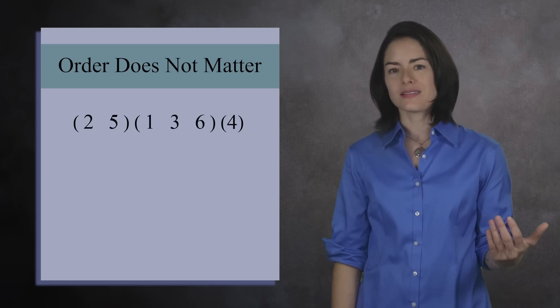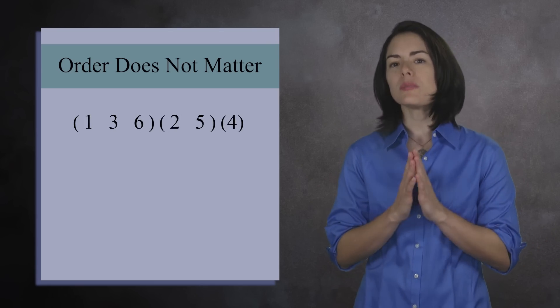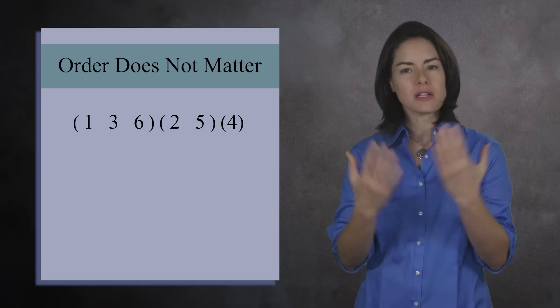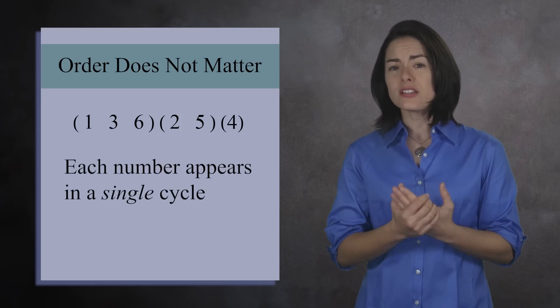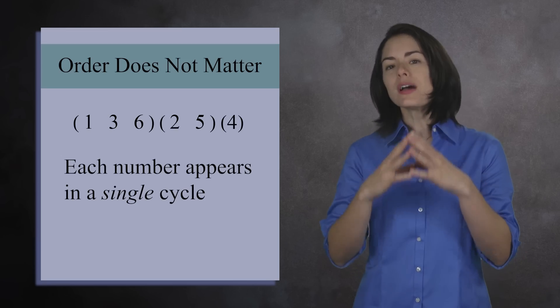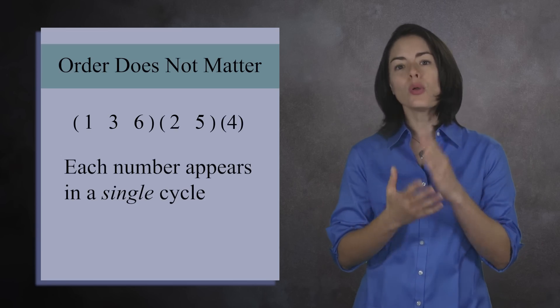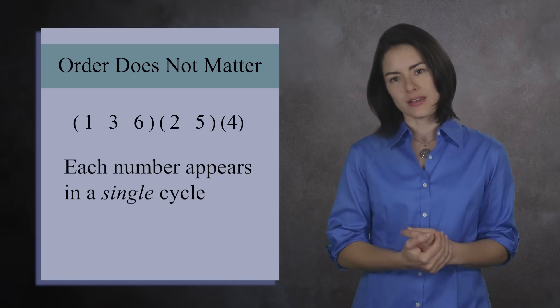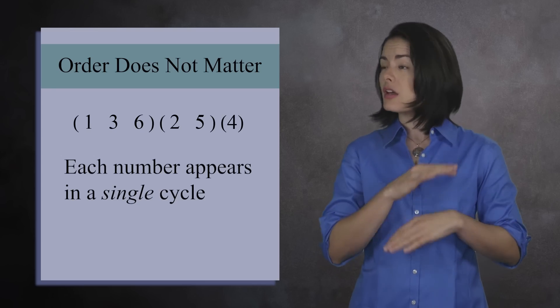But why is this? Here's why. Each cycle can be thought of as a bunch of functions bundled together. And notice that each of the numbers appears in one and only one cycle. So when you plug a number into these functions, it will only be affected by one of the cycles. It passes through the other cycles unaltered.